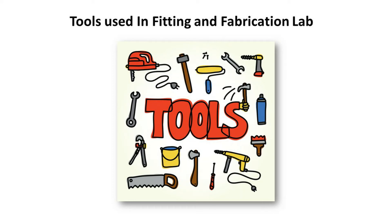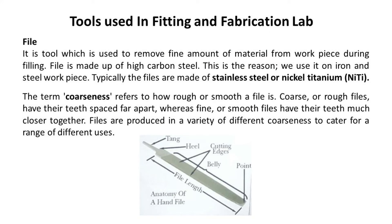Now we will discuss different tools used in fitting and fabrication lab. File is a tool which is used to remove a fine amount of material from a workpiece during filing. File is made up of high carbon steel, which is the reason we use it on iron and steel workpieces. Typically, files are also made of stainless steel or nickel titanium.